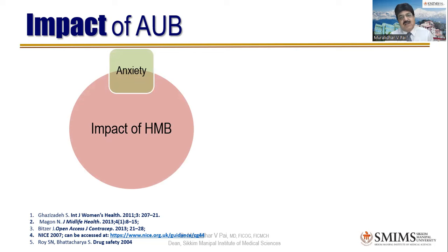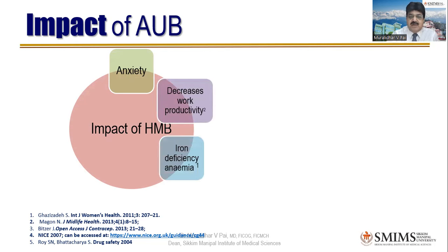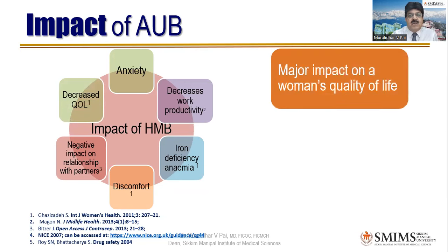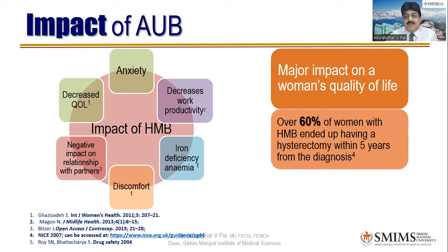The impact of AUB includes anxiety due to irregular and heavy bleeding, decreased work productivity, sometimes needing to take leave, and anemia. AUB is often associated with pain, causing discomfort. There can also be a negative impact on the relationship with the partner, and ultimately a decrease in quality of life. Over 60 percent of women end up with hysterectomy within five years — a major impact of AUB, whether there is malignancy or not. Many women get frustrated with medical management and themselves request hysterectomy.